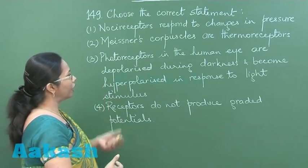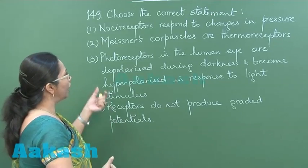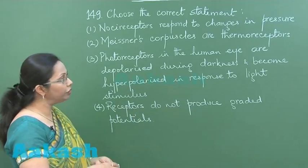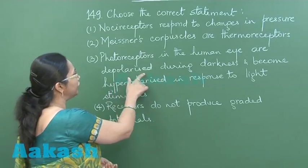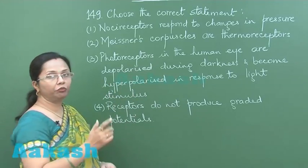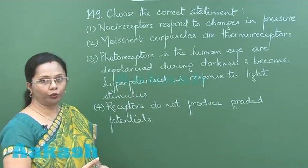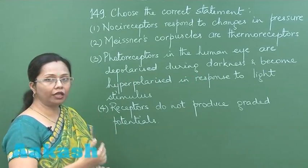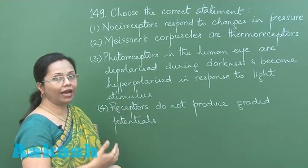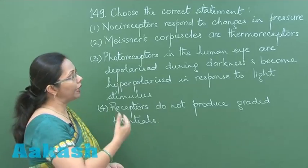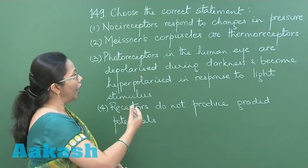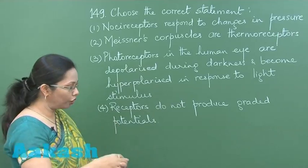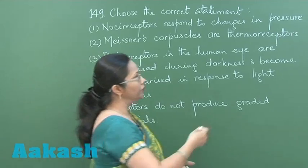The only correct statement is the third one: photoreceptors in the human eye are depolarized in the dark. When we say depolarized, that means sodium channels are open and sodium is continuously entering into the cell. This is what is happening in the rods and cones.